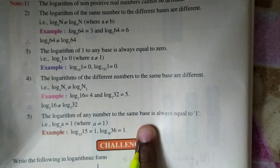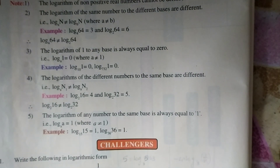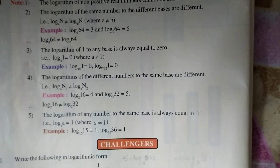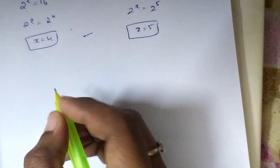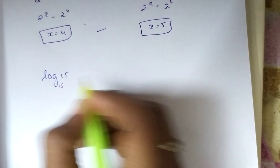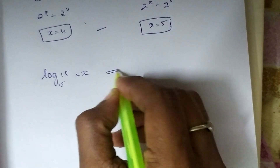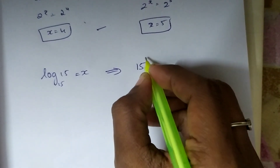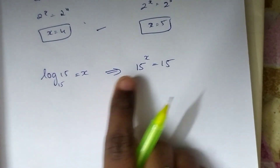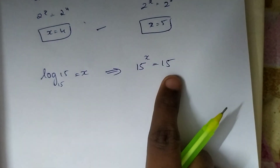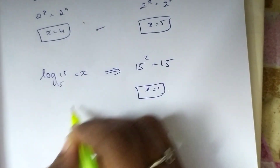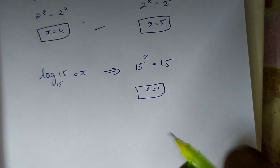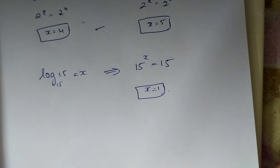The logarithm of any number to the same base is always equal to 1. For example, log a base a equals 1, log 15 base 15 equals 1, log 36 base 36 equals 1. To verify: let log 15 base 15 equal x, then 15 power x equals 15, which means x equals 1. So the logarithm of a number to the same base is always equal to 1.